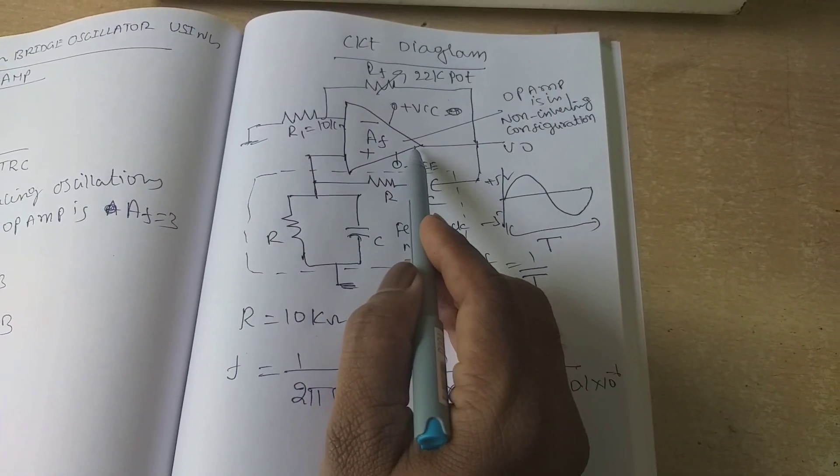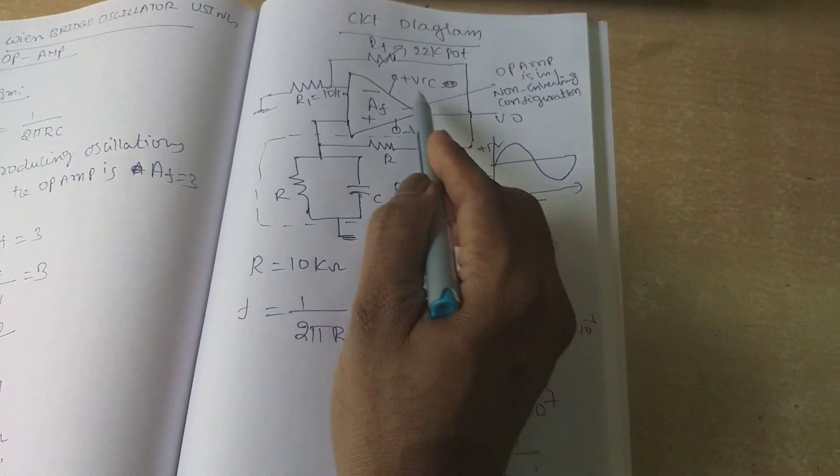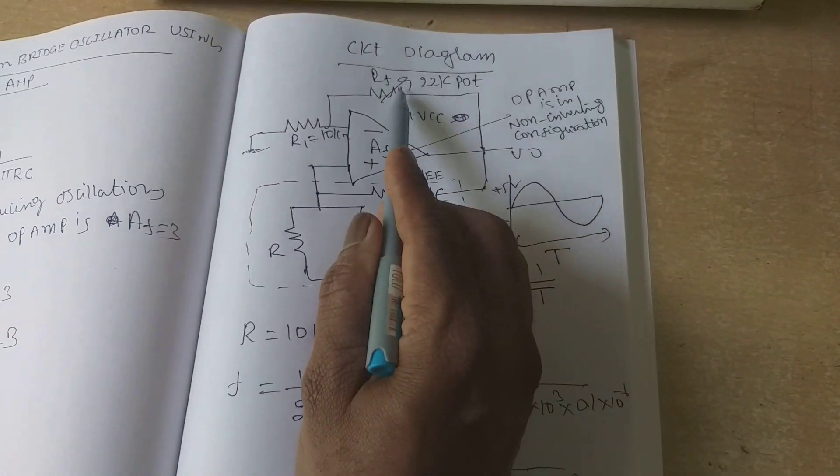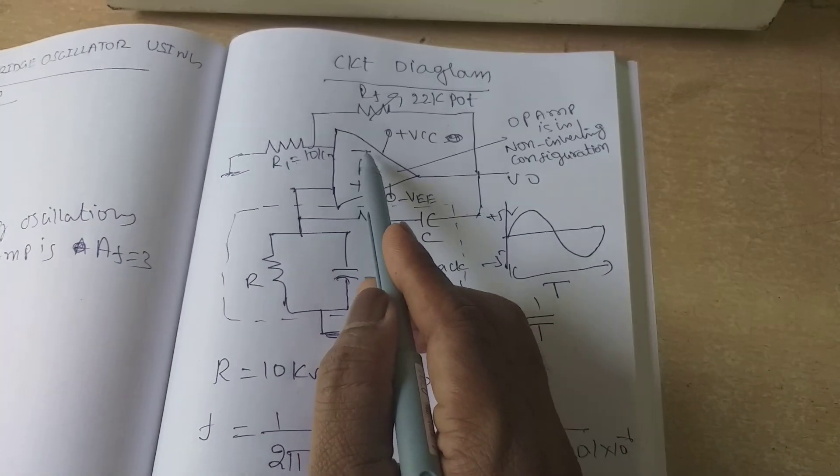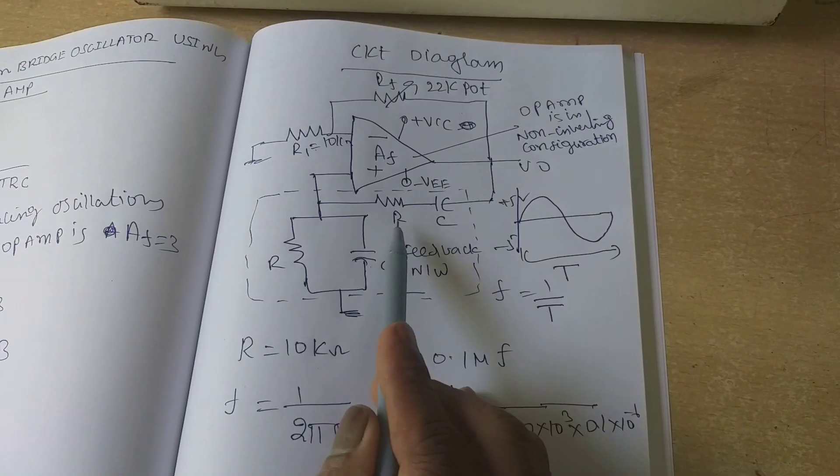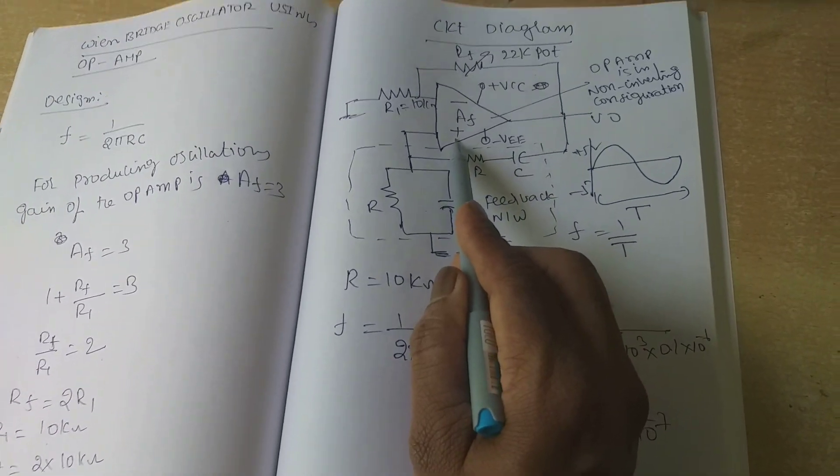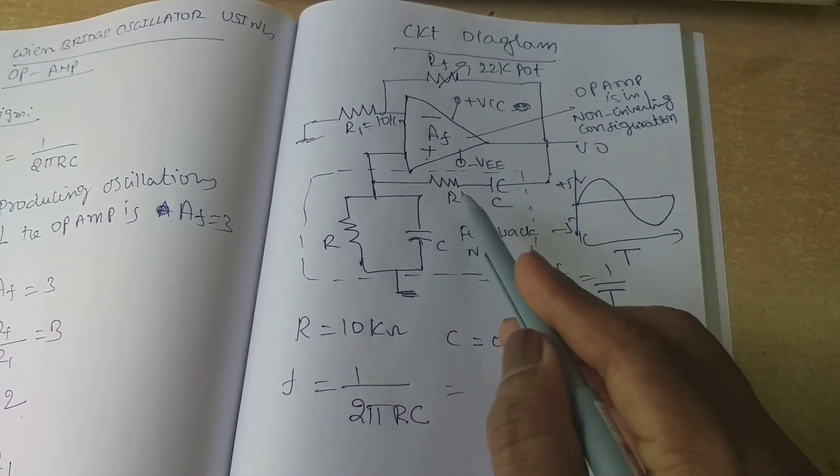See, the op-amp is in non-inverting configuration. R1 and RF are resistances connected to inverting terminal of the op-amp. RC and parallel RC and series RC are connected to the non-inverting terminal of that op-amp.